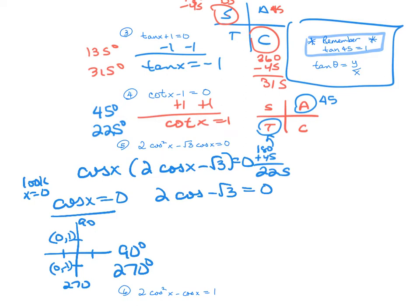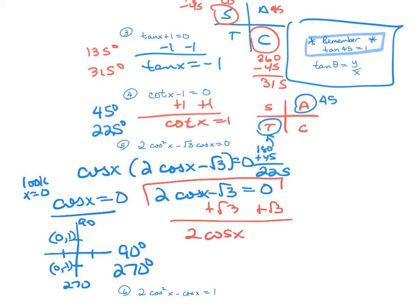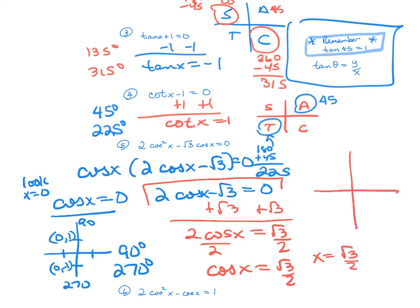I need to finish solving the other factor. Adding root 3 and dividing by 2 gives cosine x equals root 3 over 2. I'll do my all students take calculus — cosine is positive in quadrants 1 and 4. Looking at the unit circle, the reference angle where x equals root 3 over 2 is 30 degrees. And the other angle in quadrant 4 is 330 degrees. So the full answer set for number 5 is 30, 90, 270, and 330 degrees.